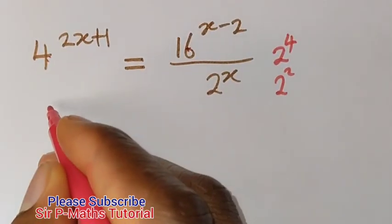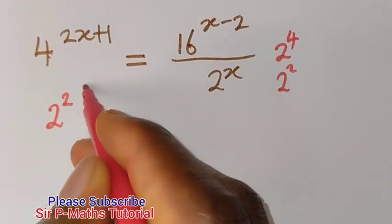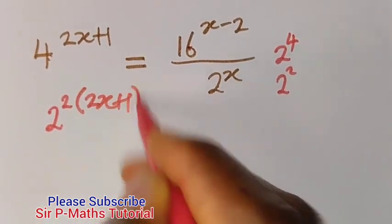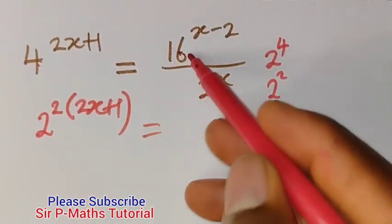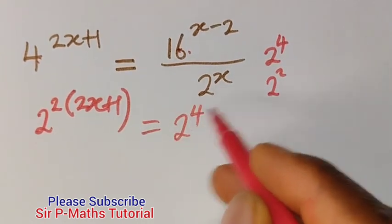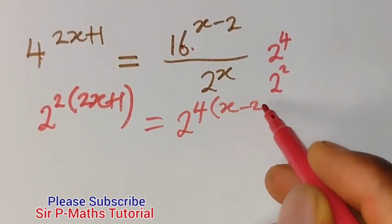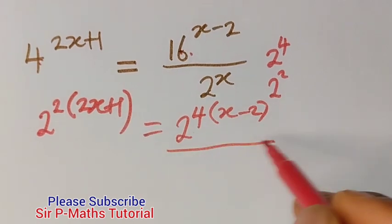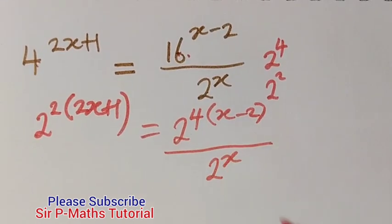So the first thing I will do is to say 2 raised to power 2, open bracket and write 2x plus 1 is equal to, for 16 I will have 2 raised to power 4, open bracket and write x minus 2 all over 2 raised to power x.